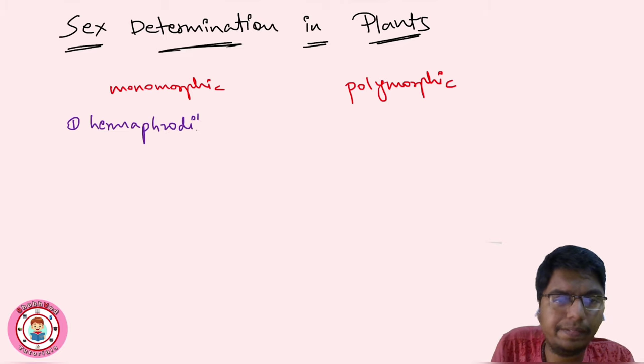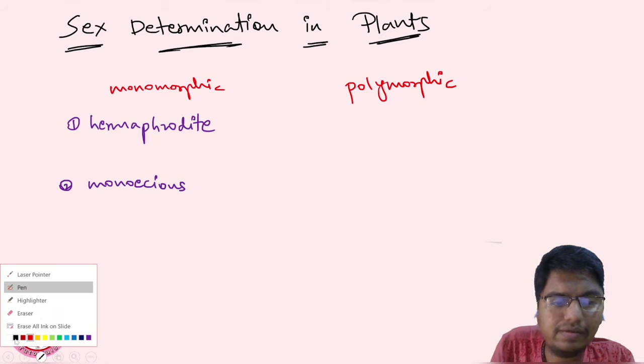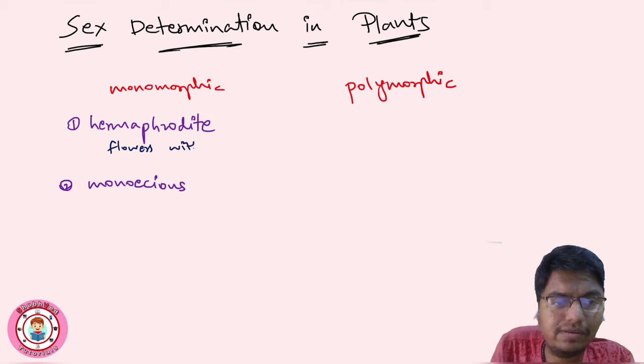First is hermaphrodite. In hermaphrodite, flowers have male and female organs. Flowers are having both the sexes within a single plant.